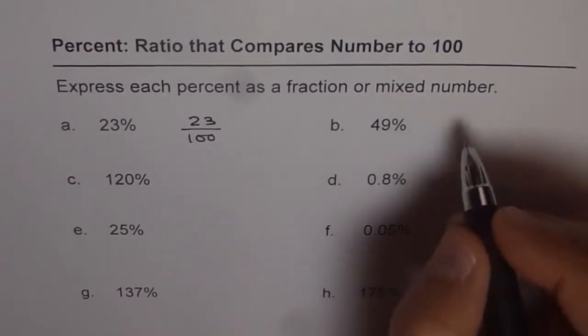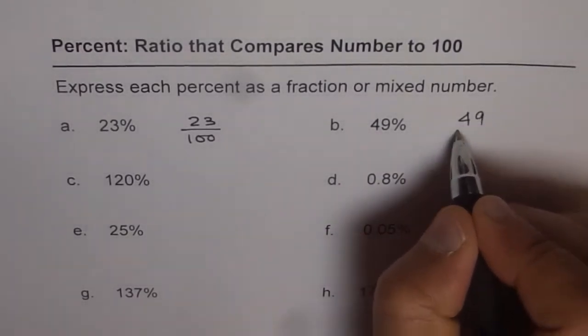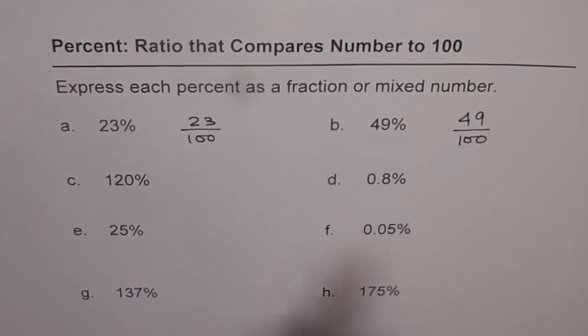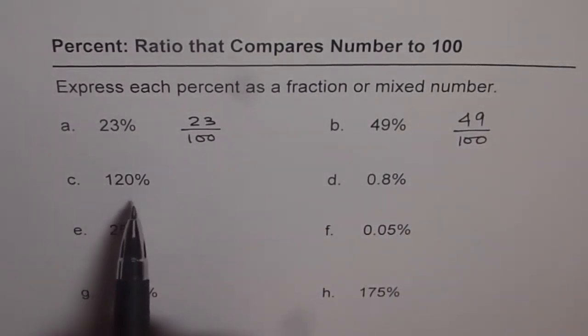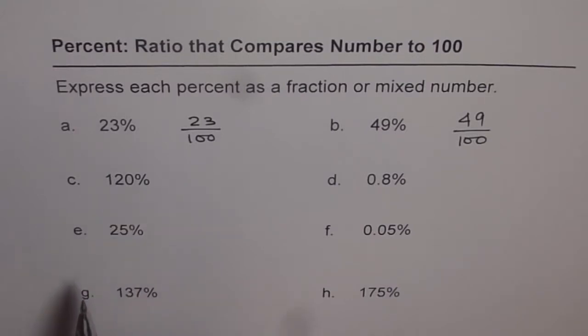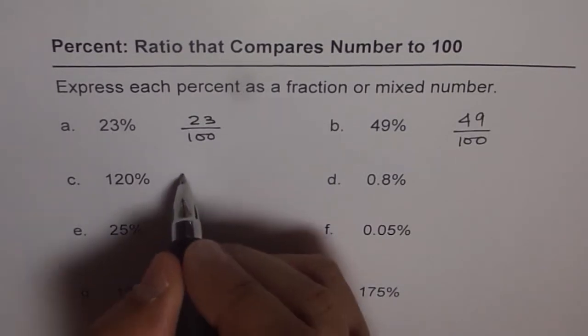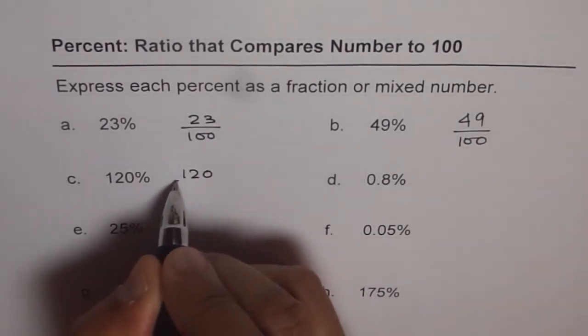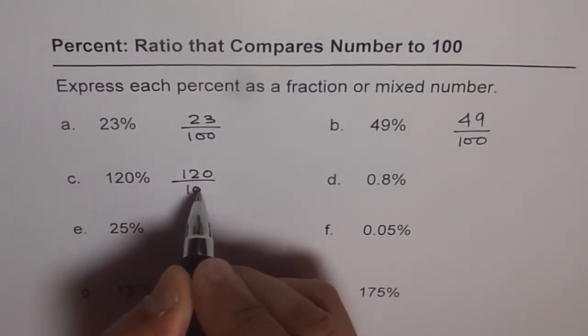Now 49 percent, simple, 49 over 100. So the idea is, when you get percent, just think about it as denominator of 100 and the number is in the numerator. Well at times, it could be more than 100. So we get like 120 percent. That means 120 over 100.